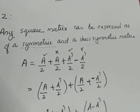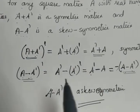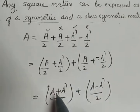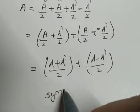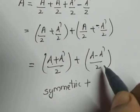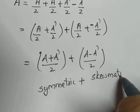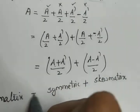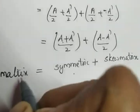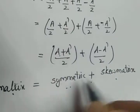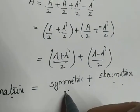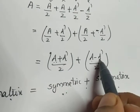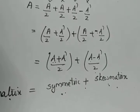This can be written as (A plus A transpose)/2 plus (A minus A transpose)/2. From Theorem 1, A plus A transpose is symmetric and A minus A transpose is skew-symmetric. So any square matrix can be written as the sum of a symmetric matrix (A plus A transpose)/2 and a skew-symmetric matrix (A minus A transpose)/2. This will be applied in the upcoming questions.